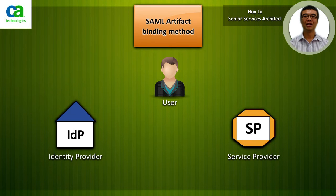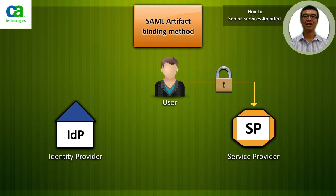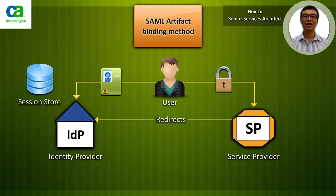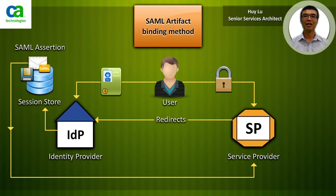Let's have a look at the artifact binding method. In step 1, a user requests a resource from the service provider. As the user has not logged in, the service provider will then redirect the user to the identity provider for authentication in step 2. In step 3, the user would validate their credentials to the identity provider and successfully log in. In step 4, the identity provider will then save the SAML assertion to the session store and redirect the user to the service provider with a SAML artifact in the query string.